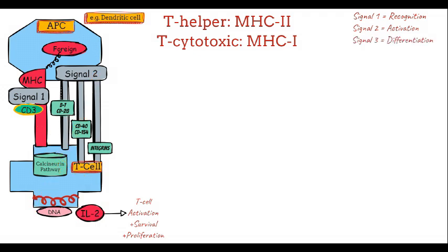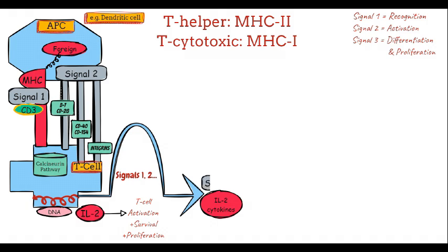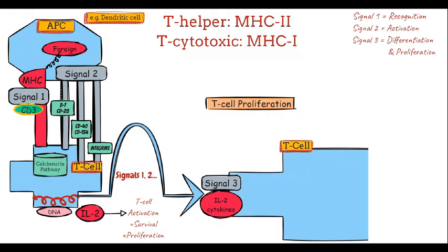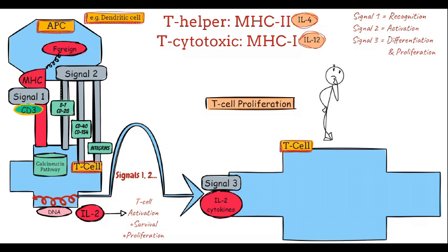Finally, we reach signal 3, which provides the cytokine environment necessary for T-cell differentiation and full activation. Once the T-cell has received signals 1 and 2, it relies on cytokines to decide its specific function and how it will respond. IL-2 is a key cytokine in signal 3, promoting T-cell proliferation and survival. Other cytokines, like IL-12 or IL-4, guide the T-cell's differentiation into different types of helper T-cells or cytotoxic T-cells.